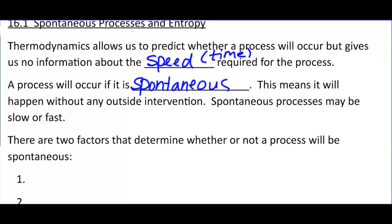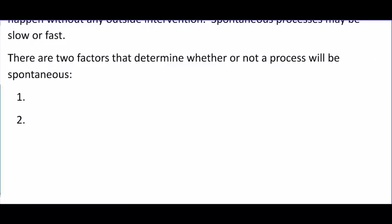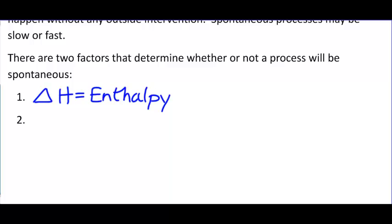There are really two things that will determine if a process will be spontaneous. Number one is delta H, your enthalpy. Most spontaneous processes are exothermic — they release heat. That kind of makes sense. If you have to put a lot of heat into a process to make it happen, chances are it won't occur all by itself. So, exothermic reactions favor spontaneity.